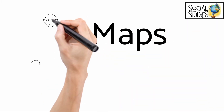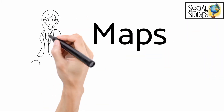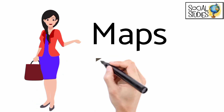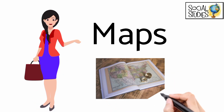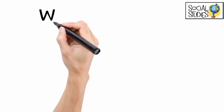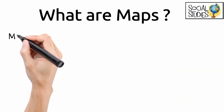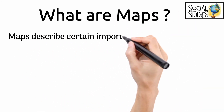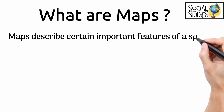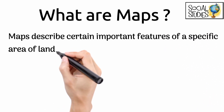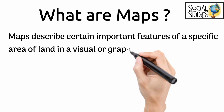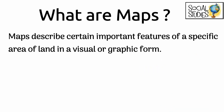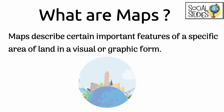In this lesson we will learn about maps. What are maps? Maps describe certain important features of a specific area of land in a visual or graphic form. They help us understand important things about the surface of the earth in a visual way.